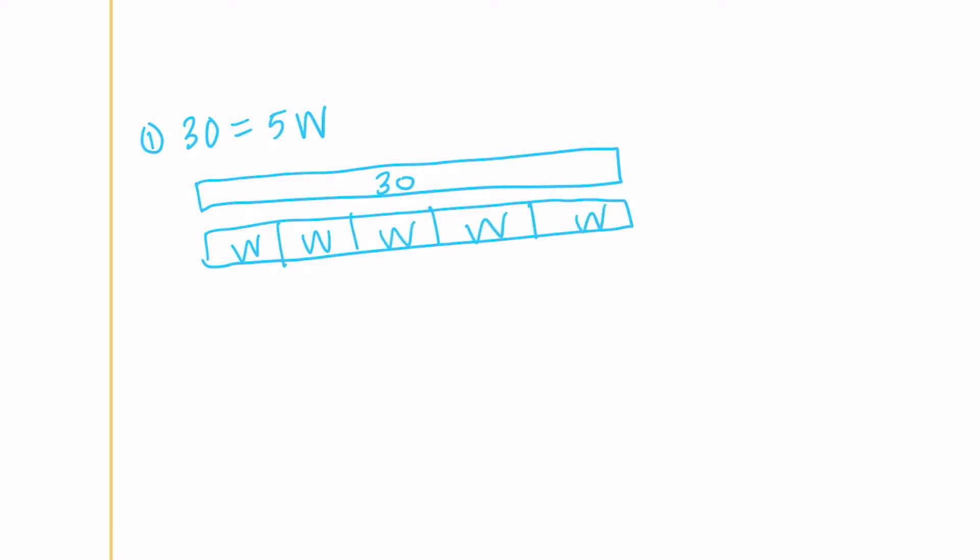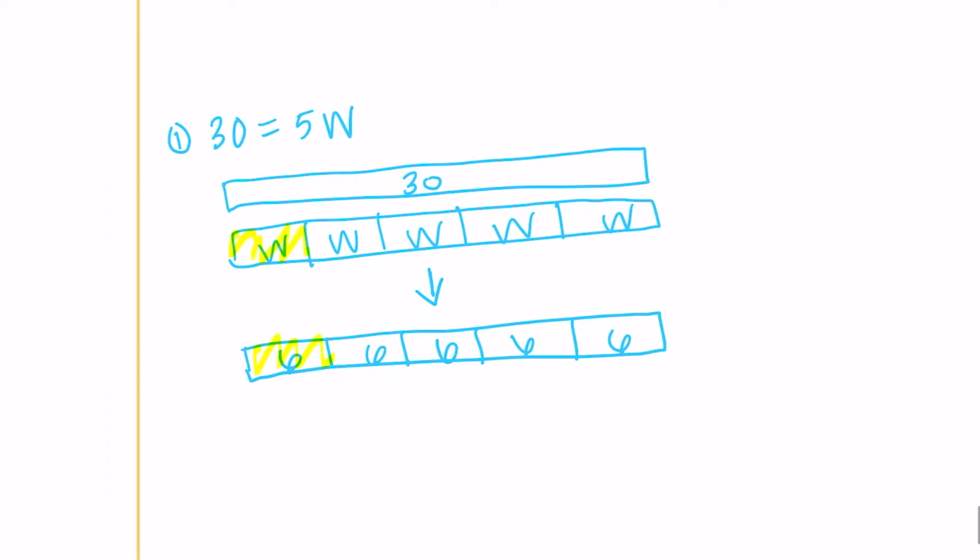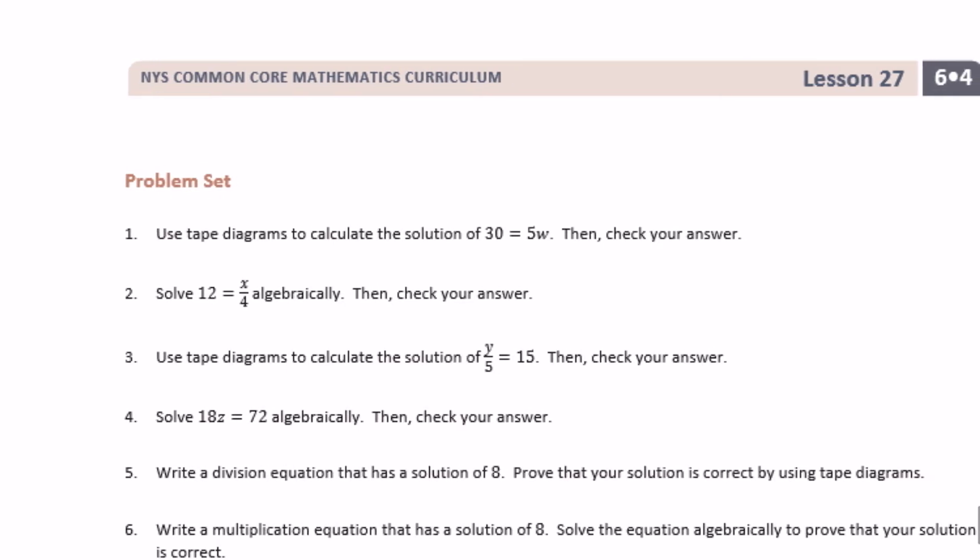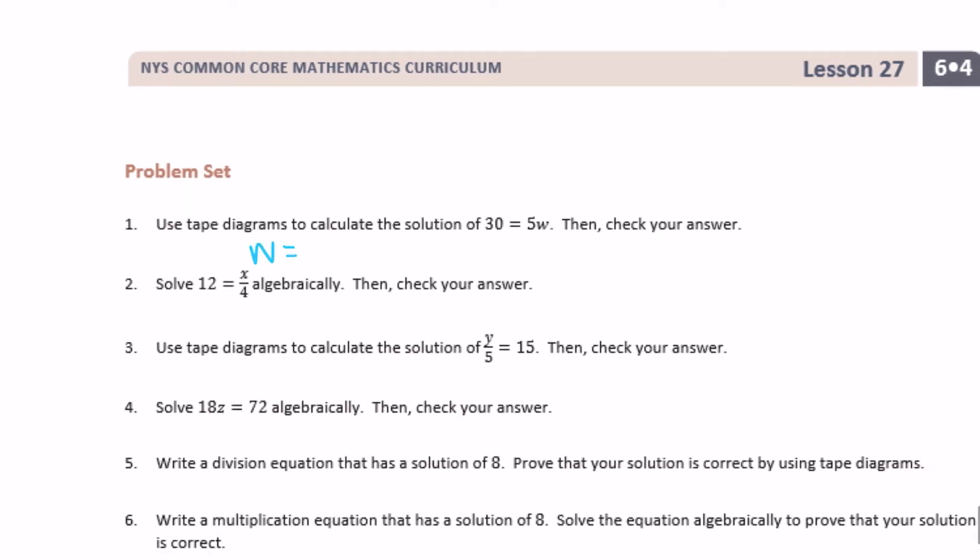So 30 is equal to 5w. If we take that 30 and split it up equally into those 5w's, each one 30 divided by 5 is 6. So each of these would be 6. We can see that w is equal to 6. And we can tell that it works by checking. So 30 is equal to 5 times 6, which is true.